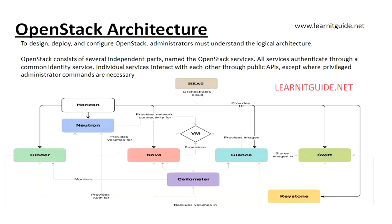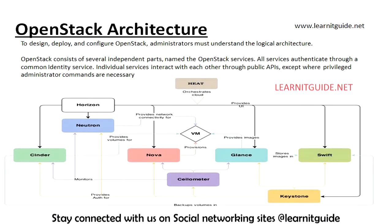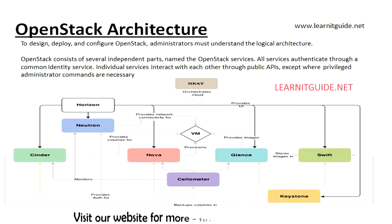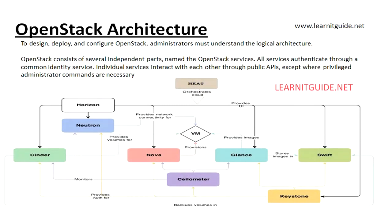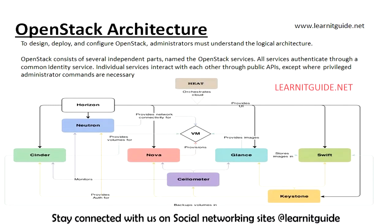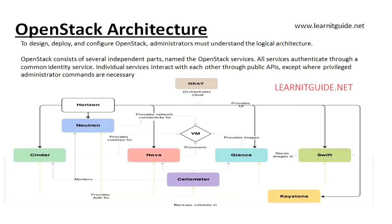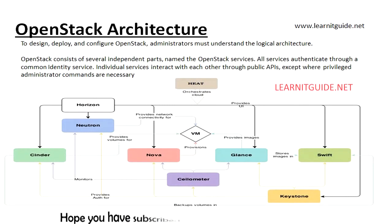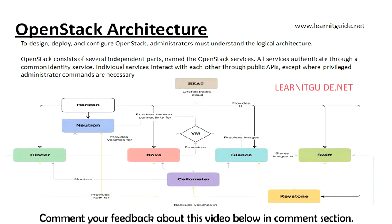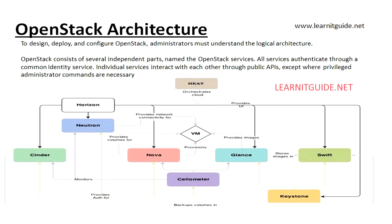Internally, OpenStack services are composed of several processes. All services have at least one API process which listens for API requests, both incoming and outgoing, pre-processes them, and passes them to other parts of the service as required. With the exception of the identity service, the actual work is done by distinct processes. For communication between the processes of one service, an AMQP message broker is used. A service's state is stored in a database, with a dedicated database for each component. When deploying and configuring your OpenStack cloud, you can choose among several message brokers and database solutions such as RabbitMQ, MySQL, MariaDB, and SQLite.